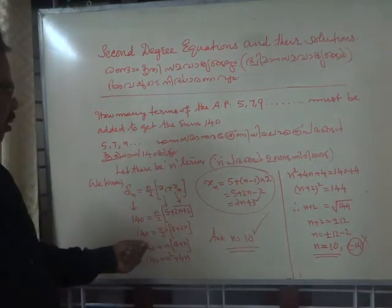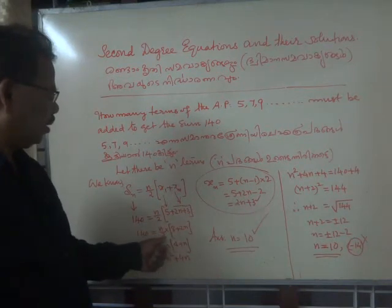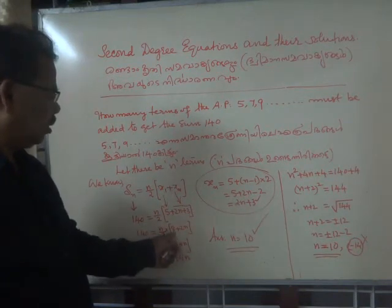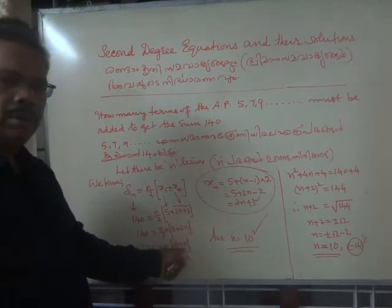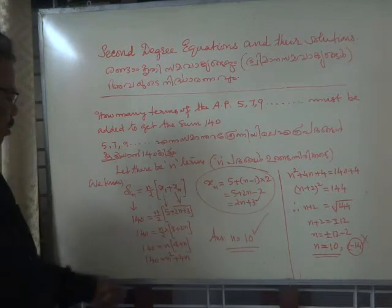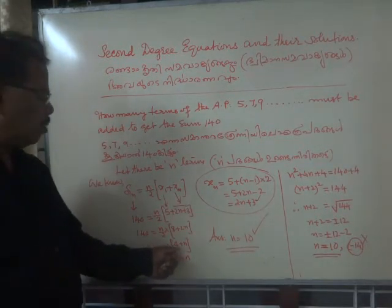Then simplify, 5 plus 3 is 8, 8 plus 2n. We are multiplying by half, so this 8 becomes 4 and 2n becomes n. 140 is equal to n into 4 plus n.